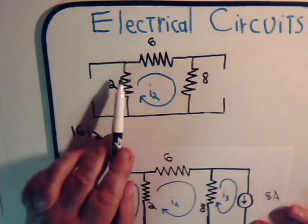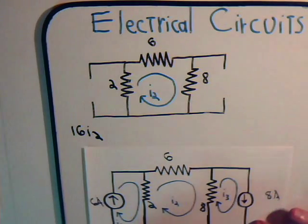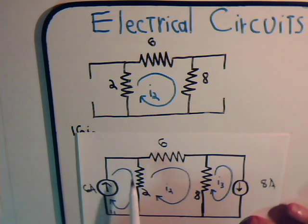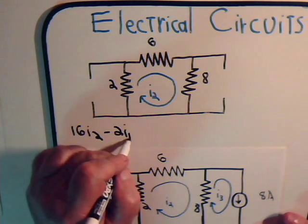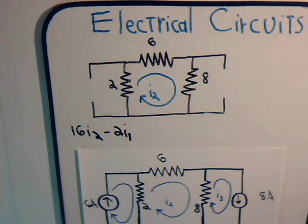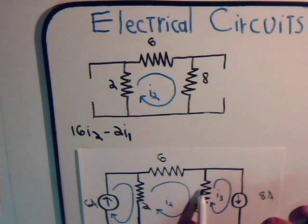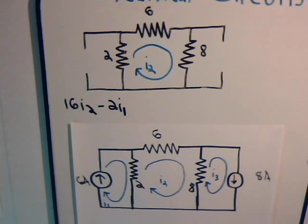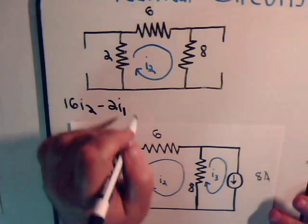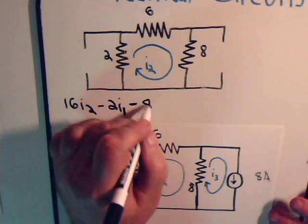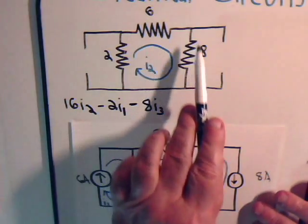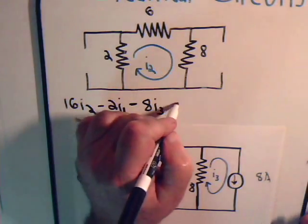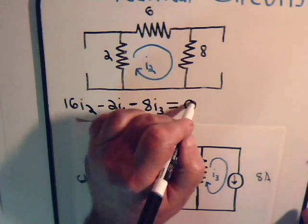Now again we consider flowing through this resistor is I1 so we have minus 2 times I1 and I2 flows through this resistor, the 8 ohm resistor downward. Current I3 is going upward so we subtract minus 8 I3. There are no voltage sources here, there are no voltage sources here, so that's set equal to 0.